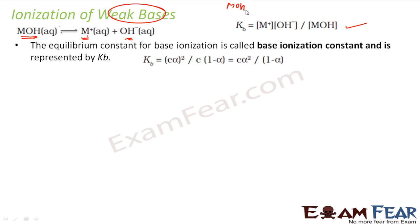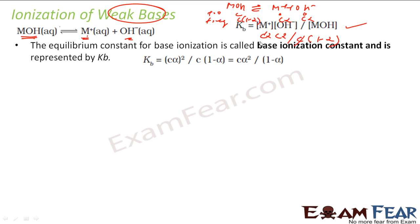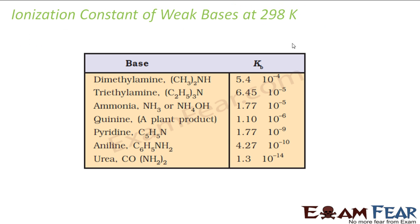You can write this equation: MOH gives M⁺ plus OH⁻. At t = 0, concentration is C, 0, 0. At equilibrium, this becomes C(1 − α), this becomes Cα, and this becomes Cα. So KB = (Cα × Cα) / (C(1 − α)), which simplifies to Cα² / (1 − α). Similarly, pKB = −log(KB).